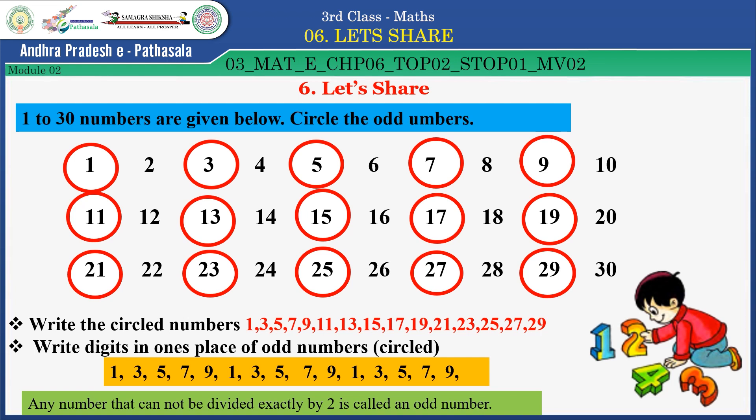Now write the digits in 1's place of odd numbers: 1, 3, 5, 7, 9 — again 1, 3, 5, 7, 9 — repeating: 1, 3, 5, 7, 9. In the 1's place, 1, 3, 5, 7, 9 keeps repeating. It is very interesting, isn't it, children?